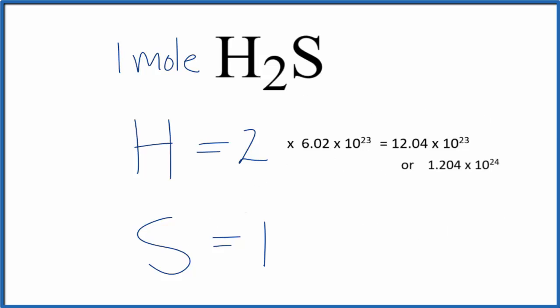Likewise, for sulfur, you would just multiply that by Avogadro's number, and that would give you 6.02 times 10 to the 23rd atoms of sulfur in H2S.